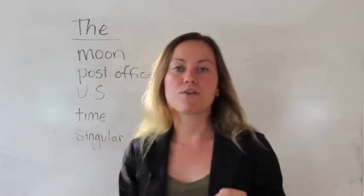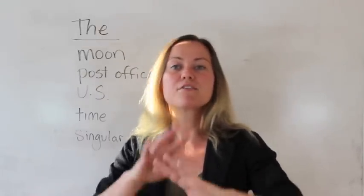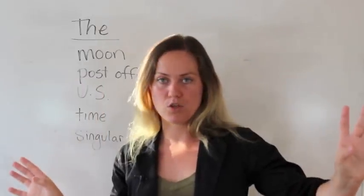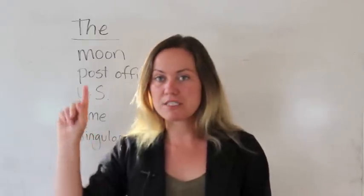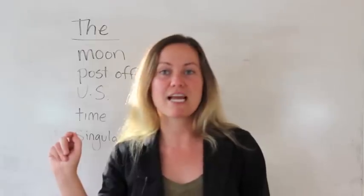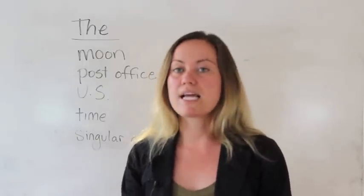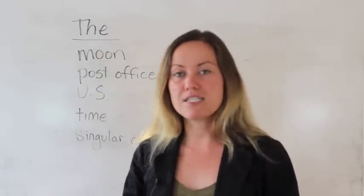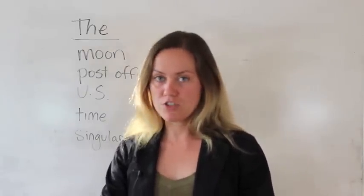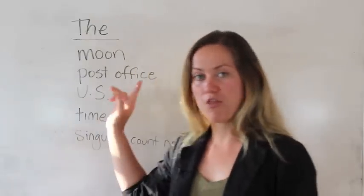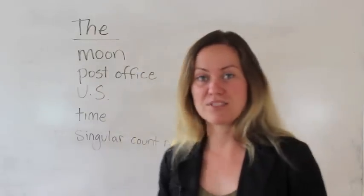Let me show you a few other examples here. We use 'the' with things that every person in the world knows about. For example, the moon. I think we all know there's a moon in the sky, so we can say 'the moon'. Similarly, we can say 'the sun', we can say 'the earth'. These are things that we all know about, so it's good to know that we can use 'the' always with those things.